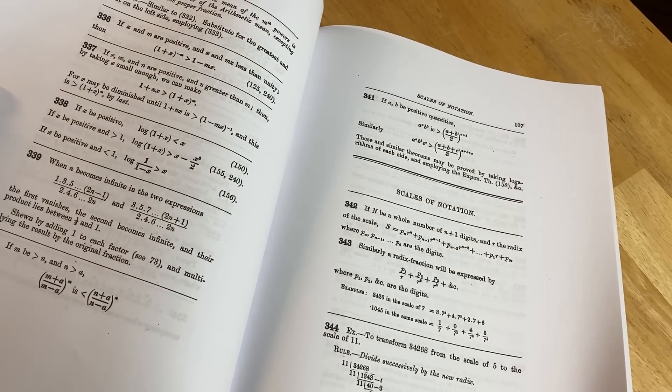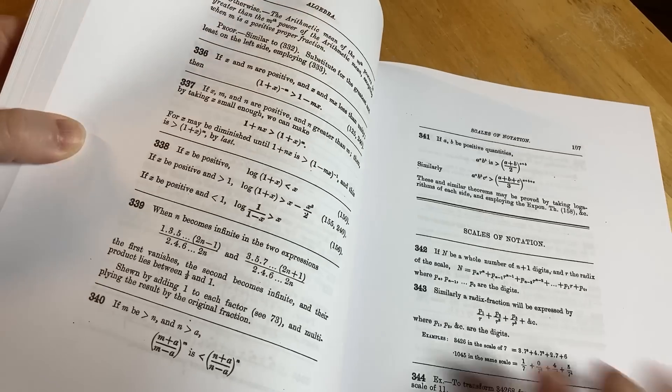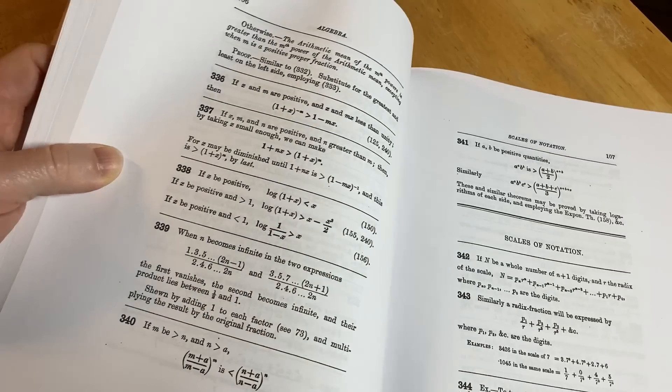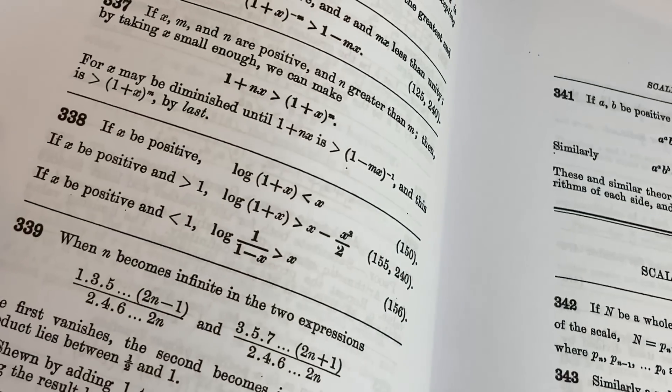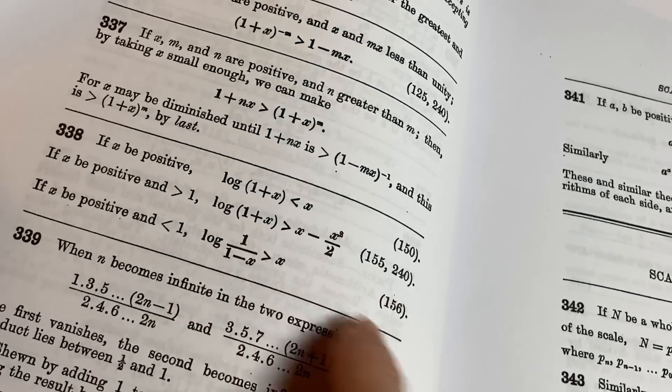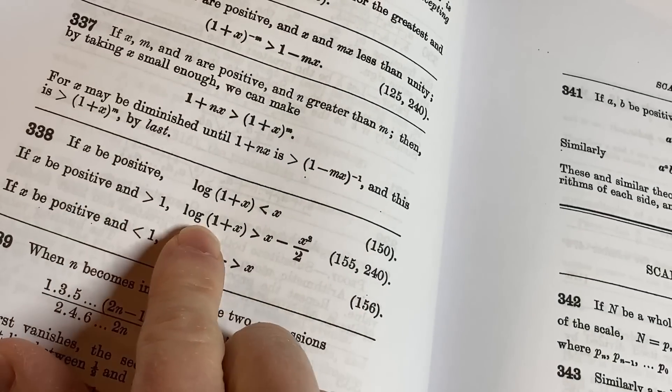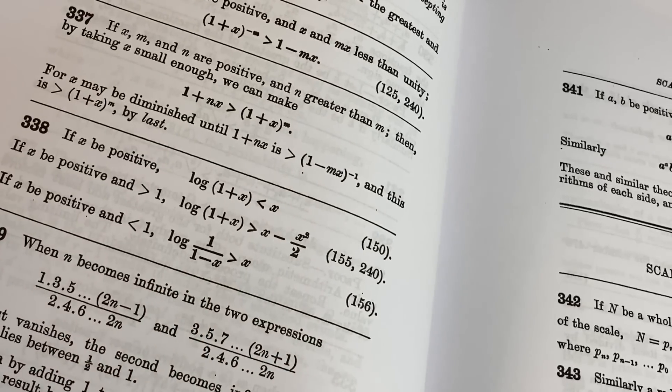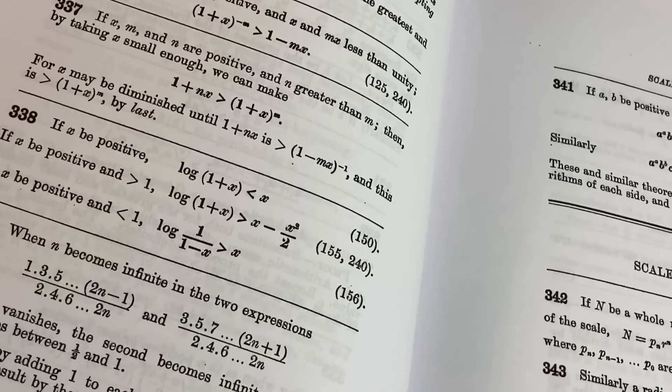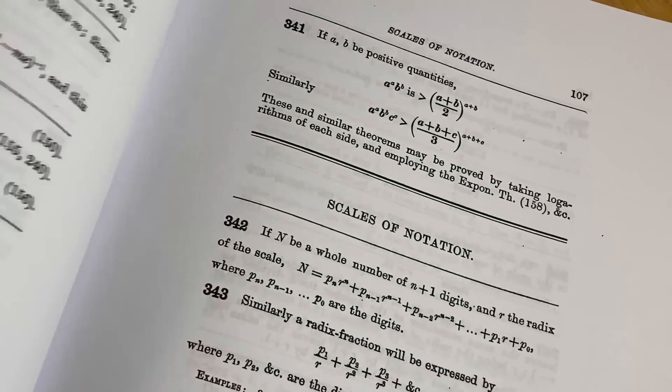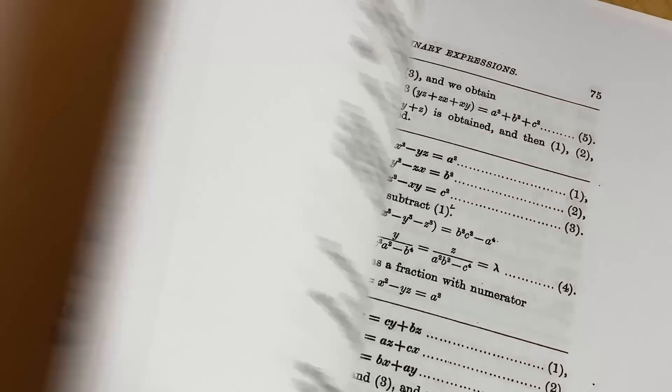Because it's hard to get the originals, you know. Some inequalities here. Look at this. Let x be positive. The log of 1 plus x is less than x. Interesting. If x be positive and greater than 1, we have this. Some inequalities. Yeah. All kinds of stuff, right? All kinds of stuff that you just don't see.